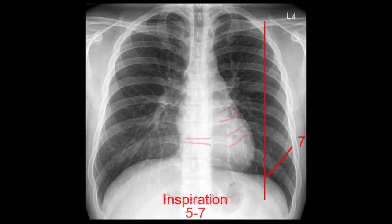Finally, check the penetration of the rays. An overpenetrated film is too dark, an underpenetrated one is too white. A trick to judge penetration is to look in the region of the heart — if you can see the spaces between the vertebrae and pulmonary vessels through the heart, penetration is adequate.